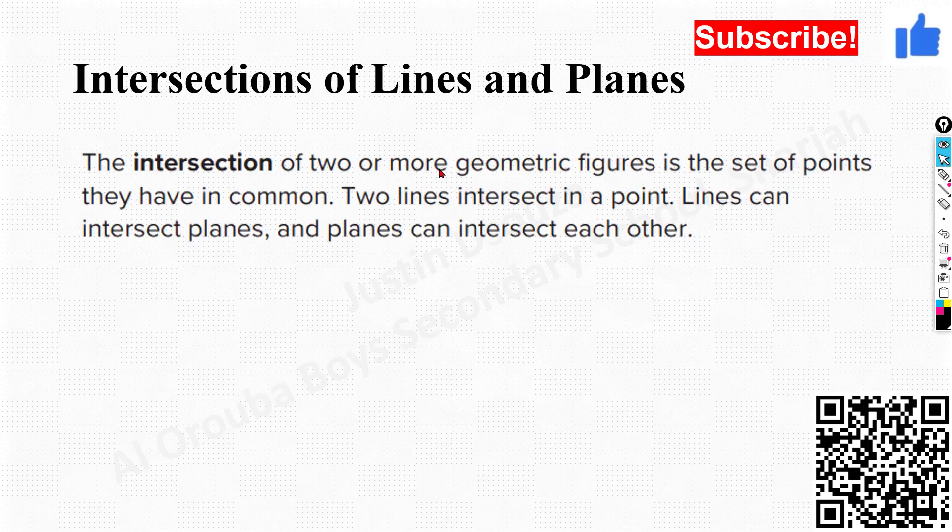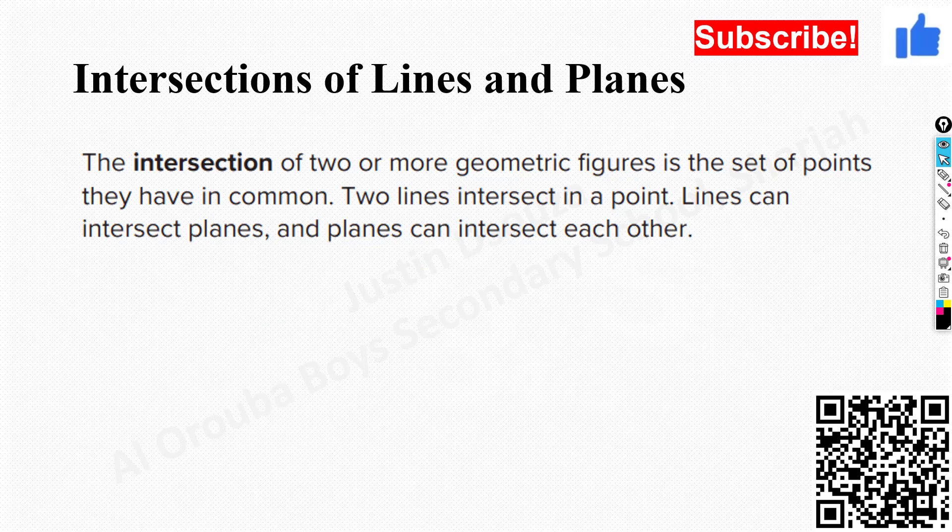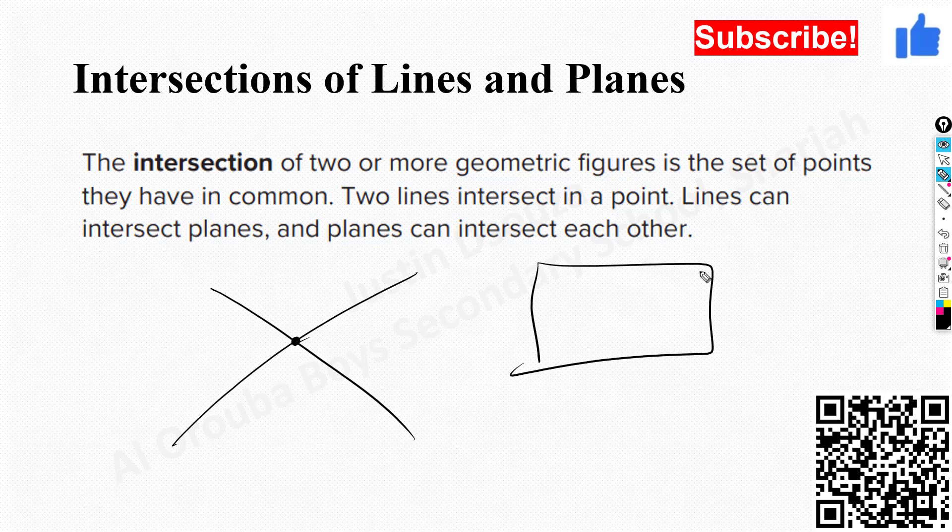Now coming back over here, the intersection of two or more geometric figures can happen in a certain way. I will just draw a line. So a line over here and a line over here. When two lines intersect, it is at a point. Whereas planes, imagine there are two planes intersecting. This and this intersecting over here. That intersection can be a line. And there can be intersection of a plane and a line as well. So these are some basic things.